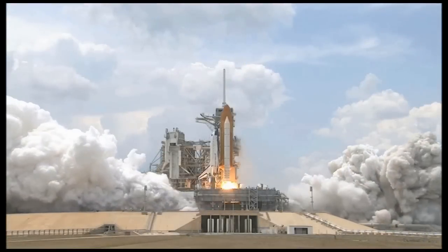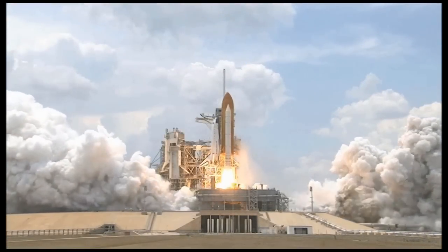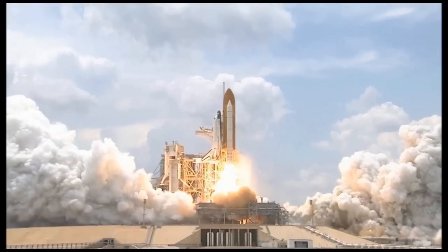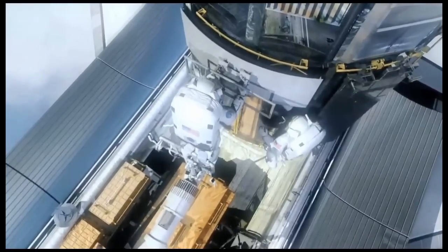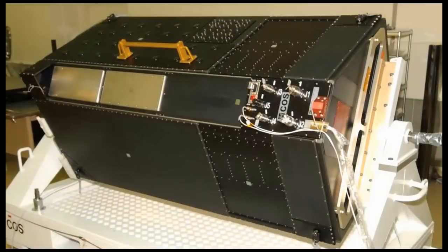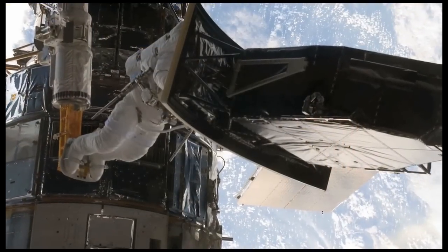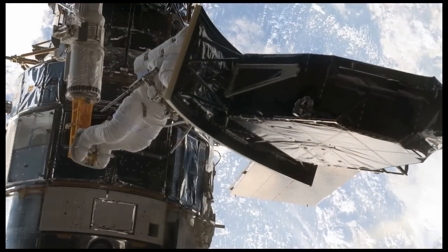In early 2009, a team of astronauts visited Hubble to repair the wear and tear of 20 years of operating in a hostile environment, and to install two new instruments: the Cosmic Origin Spectrograph and Wide Field Camera 3, better known as WFC3.